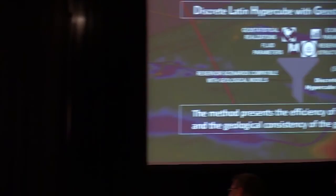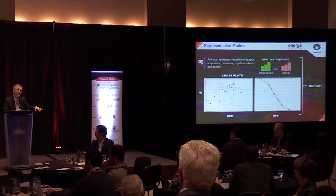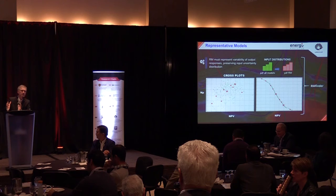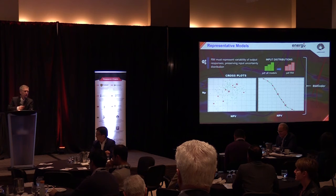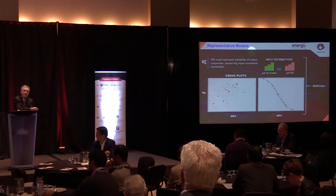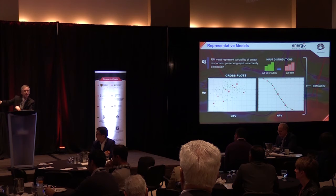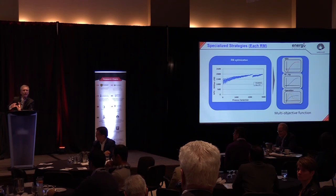On how we select representative models — whether based purely on NPV or also on oil-in-place and connectivity — we select based on all the indicators we have. We use cross-plots so all output variables like NPV, oil production, and water production are preserved. The variability is preserved, and the risk curves of each objective function are preserved. Also, the PDF of the input uncertainty properties is preserved, as well as the well behaviours. We use an optimization procedure to select these representative models.